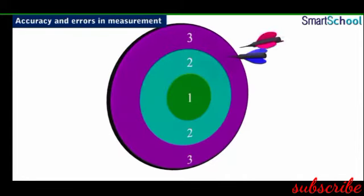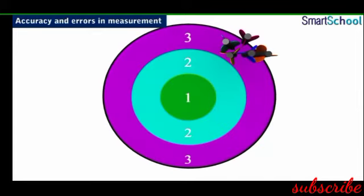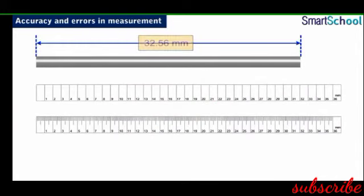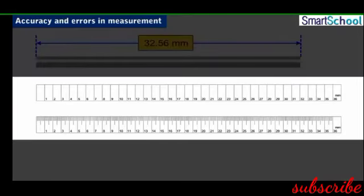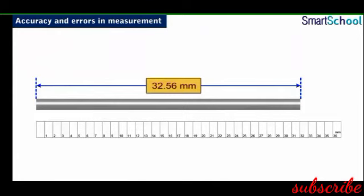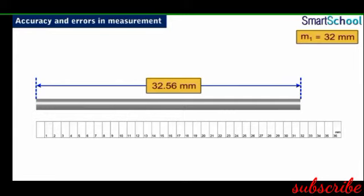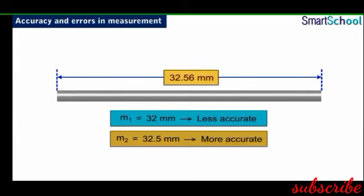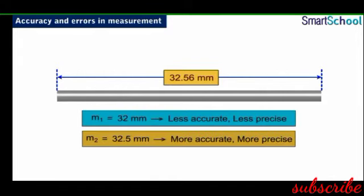Precision is the degree of resolution of a measured value when the same quantity is measured with different devices. For example, an object whose true length is 32.56 mm is measured using two instruments. Using the first instrument with resolution of 1 mm, we obtain 32 mm (M1). Using the second instrument with resolution of 0.1 mm, we obtain 32.5 mm (M2). M2 is more accurate as it is closer to the true value, and also more precise as the resolution of its instrument is greater.